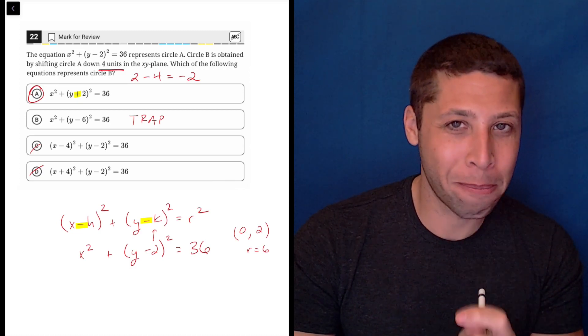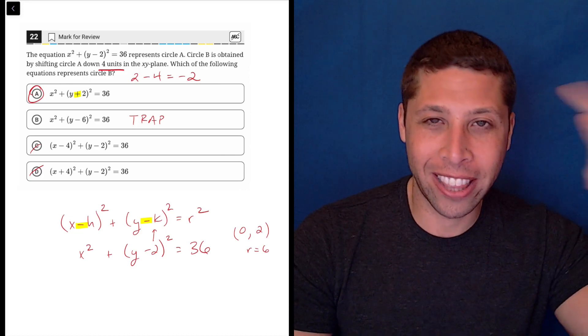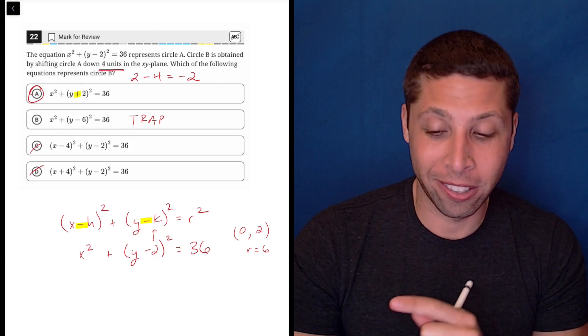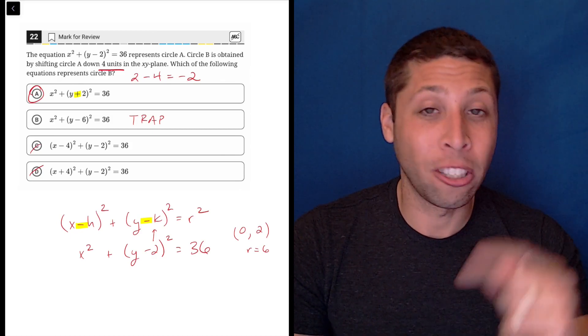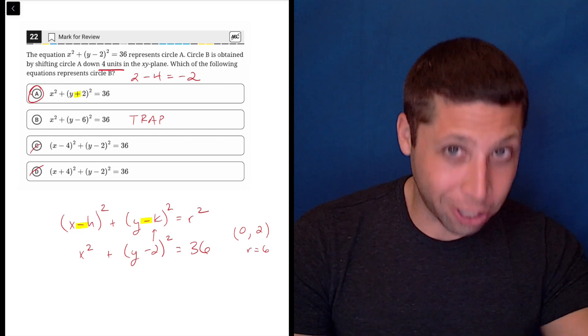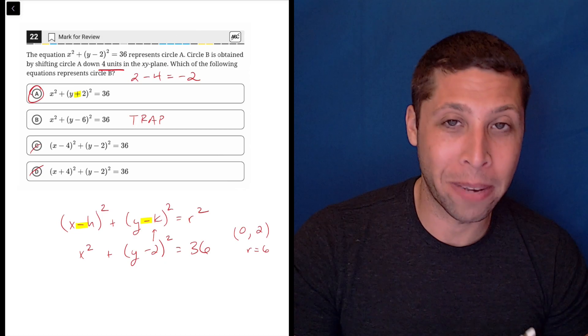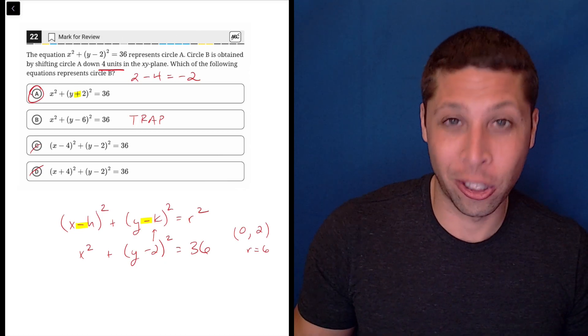But two, it's so tempting to kind of skip the math and just think about it logically. But it's so often true on lots of SAT math questions. Just because something is logical does not mean that it is true. It is logical that if we moved down 4 units, negative 2 would become negative 6. That feels good. But it's wrong, as we just saw.